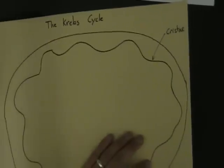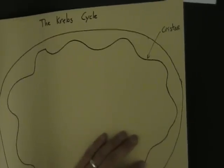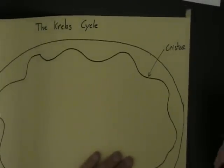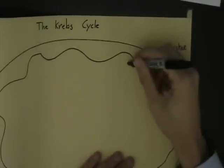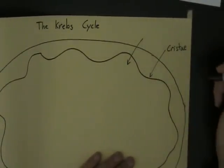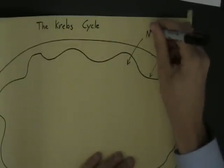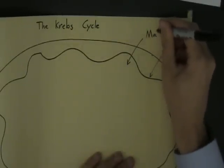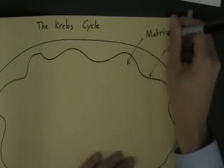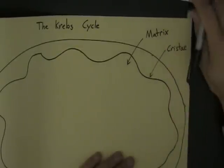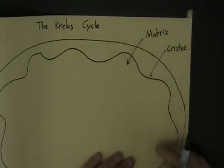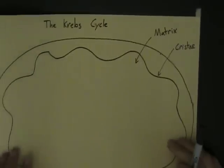Let me just zoom in a little. The liquid in the middle — like the cytosol of the mitochondria — is called the matrix. The matrix is where most of the reactions of the Krebs cycle are going to happen.